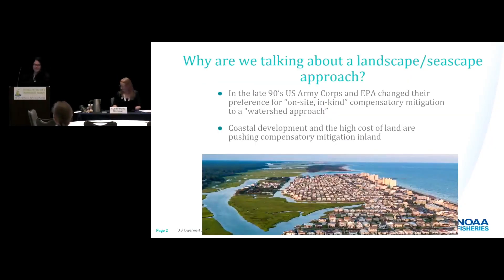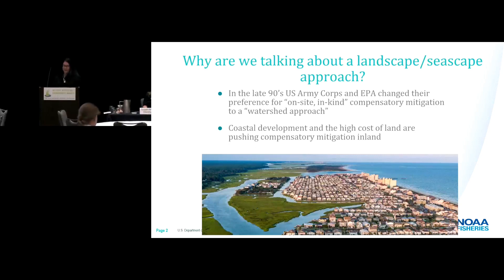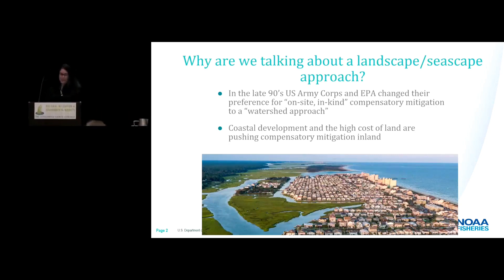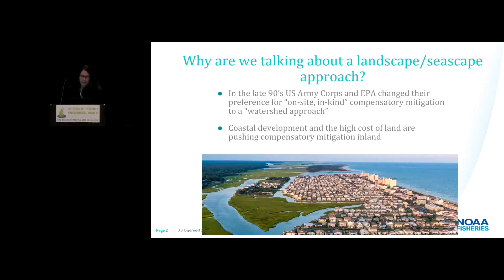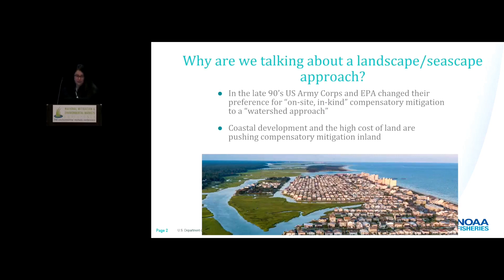So why should we consider the landscape-seascape approach? Well, in the 90s, the Corps and EPA changed their preference to a more watershed approach for compensatory mitigation. However, the watershed approach doesn't always work in estuarine or marine habitats. Plus, with a lot of modern urbanization and high population densities, it can be really difficult to acquire sites for restoration that are in close proximity to the impacted site. So even if restoration sites are available, they can often be very expensive, which can drive a lot of compensatory mitigation sites more inland away from the impacted region.